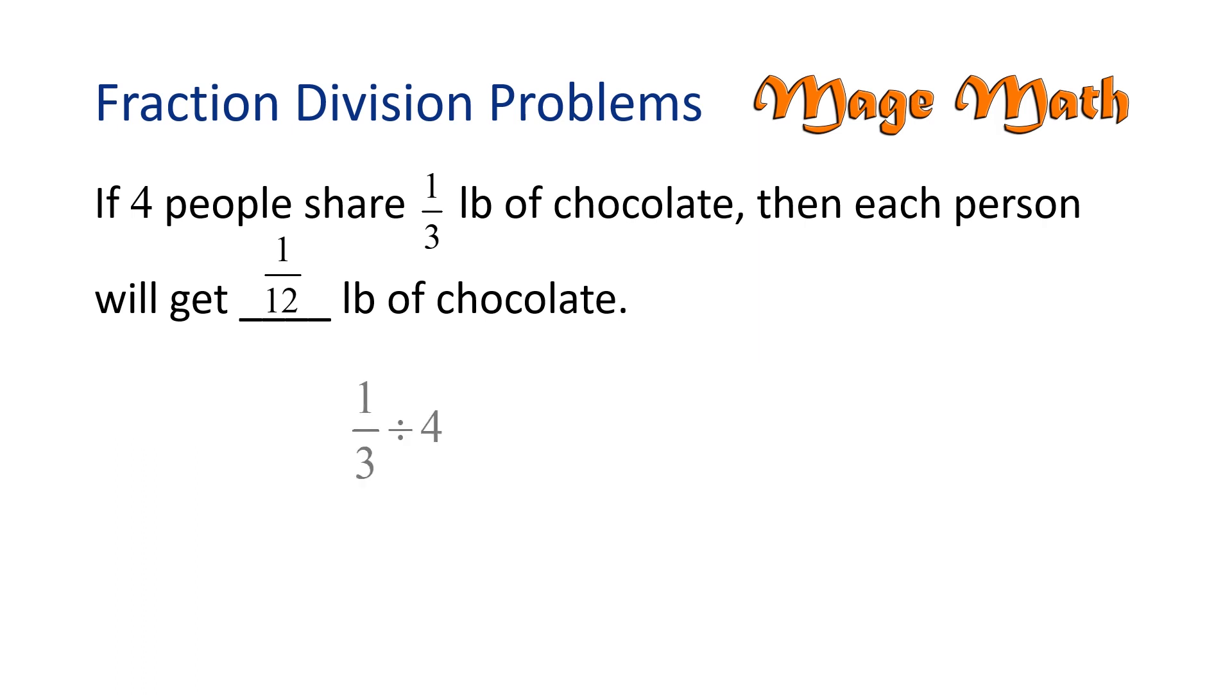1 third divided by 4 can be rewritten as 1 third times 1 fourth because the reciprocal of 4 is 1 fourth. Now we multiply straight across. That gives us 1 twelfth. Each person got 1 twelfth pound of chocolate.